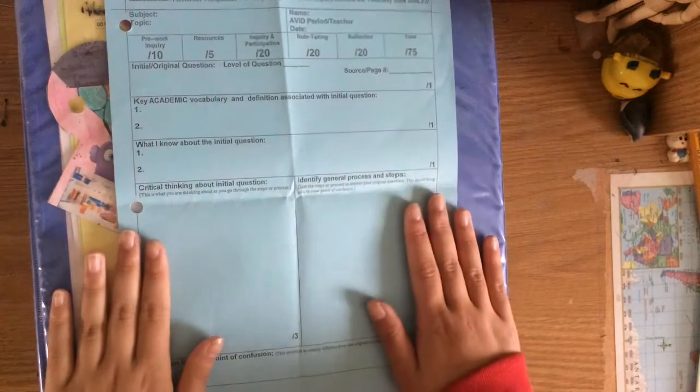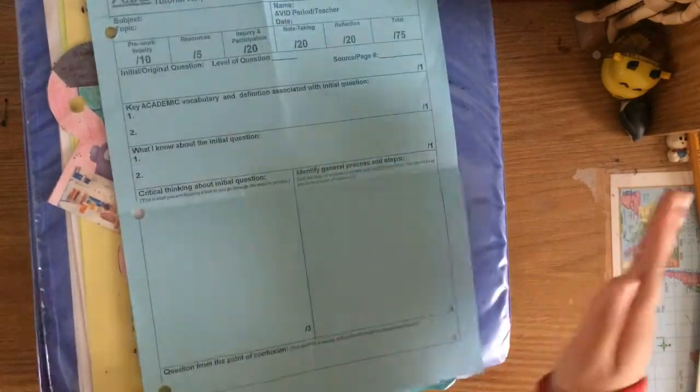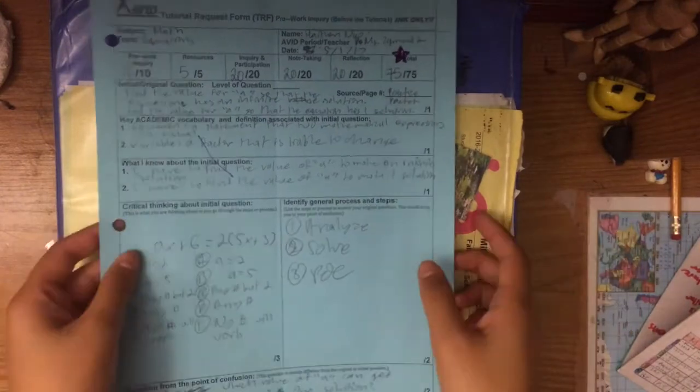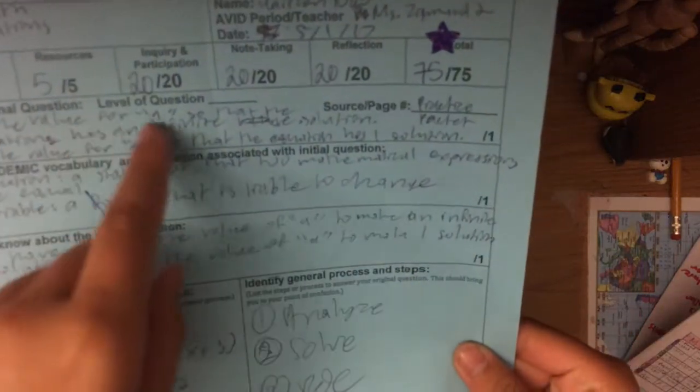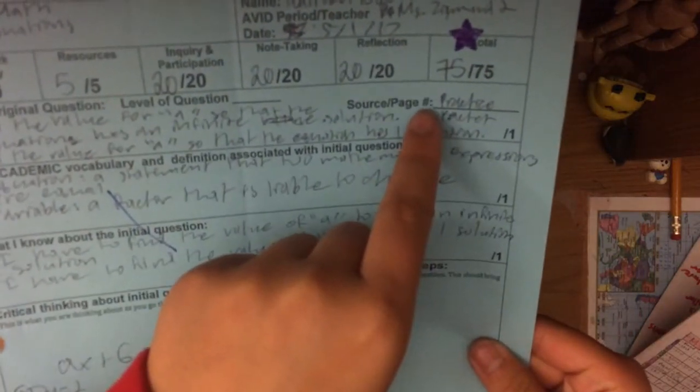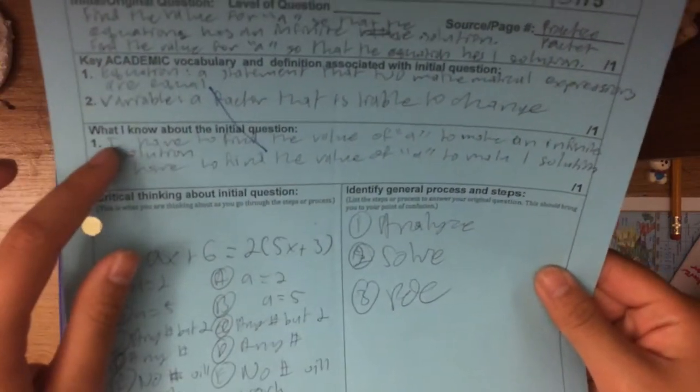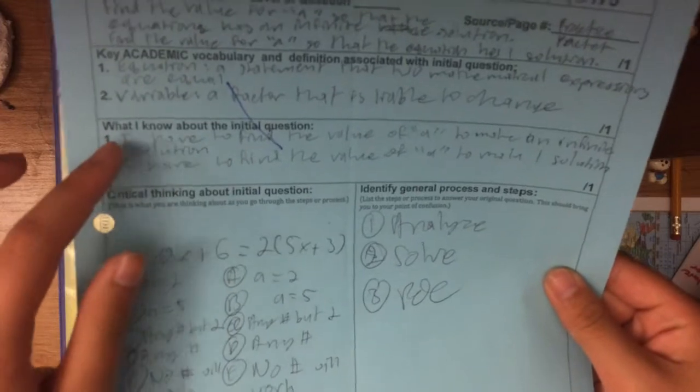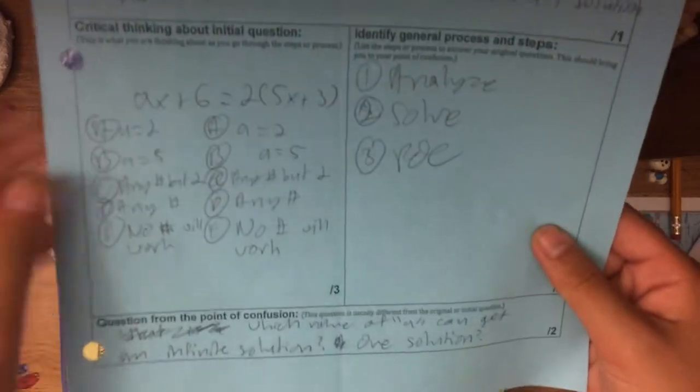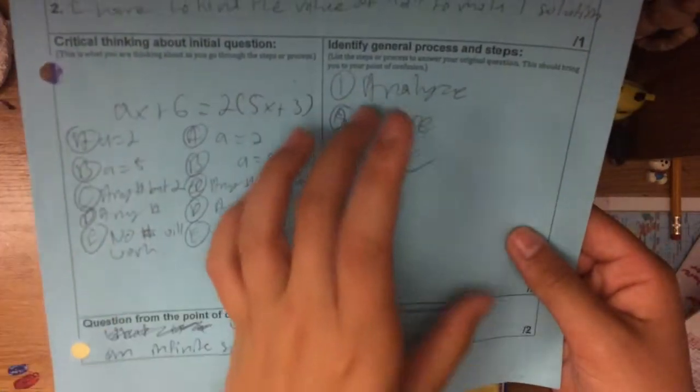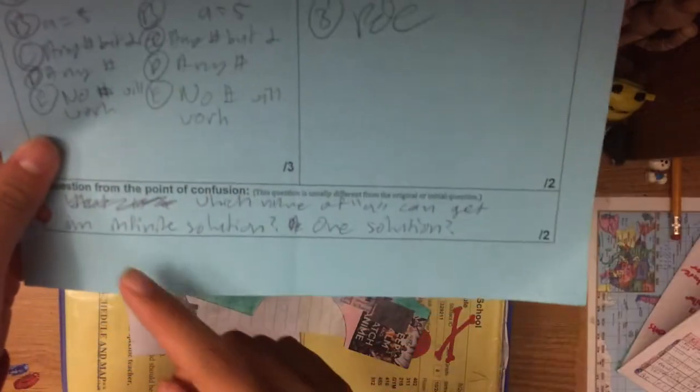You must show both of the TRFs you get back to your tutors to get credit. This is an example of a filled out TRF. As you can see, I have my original question as well as the source from where I got the question. Next I have my vocabulary and what I know about the initial question. Then I have my critical thinking as well as my process and finally my POC.